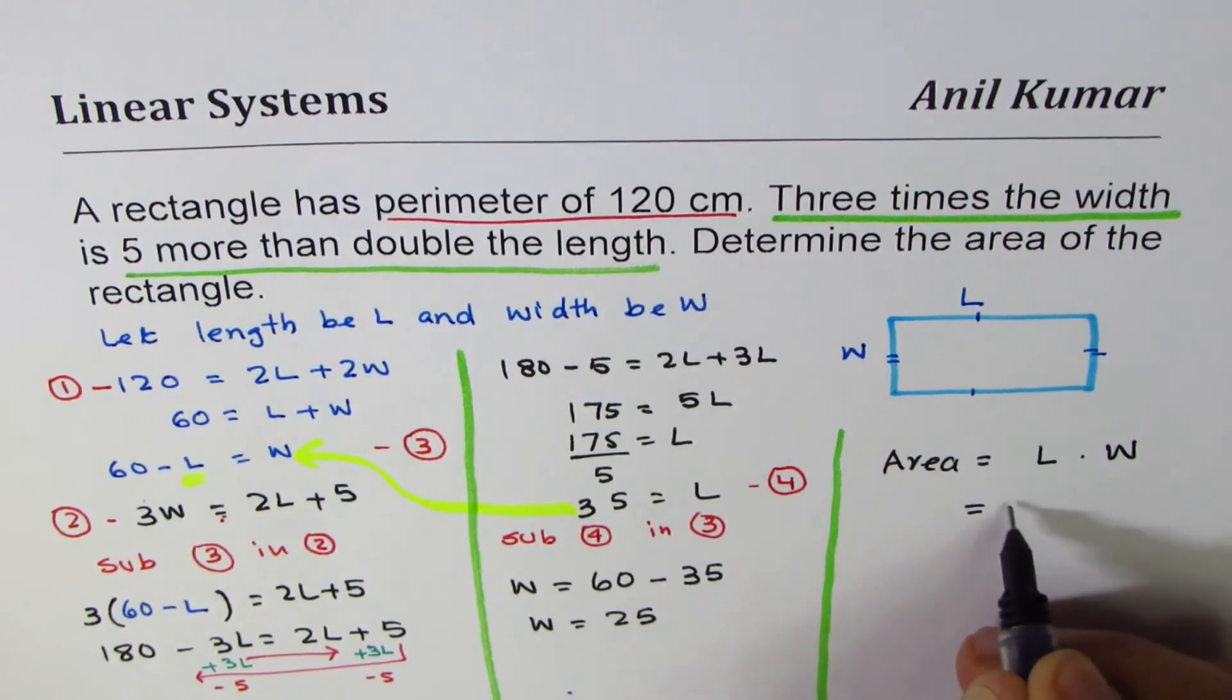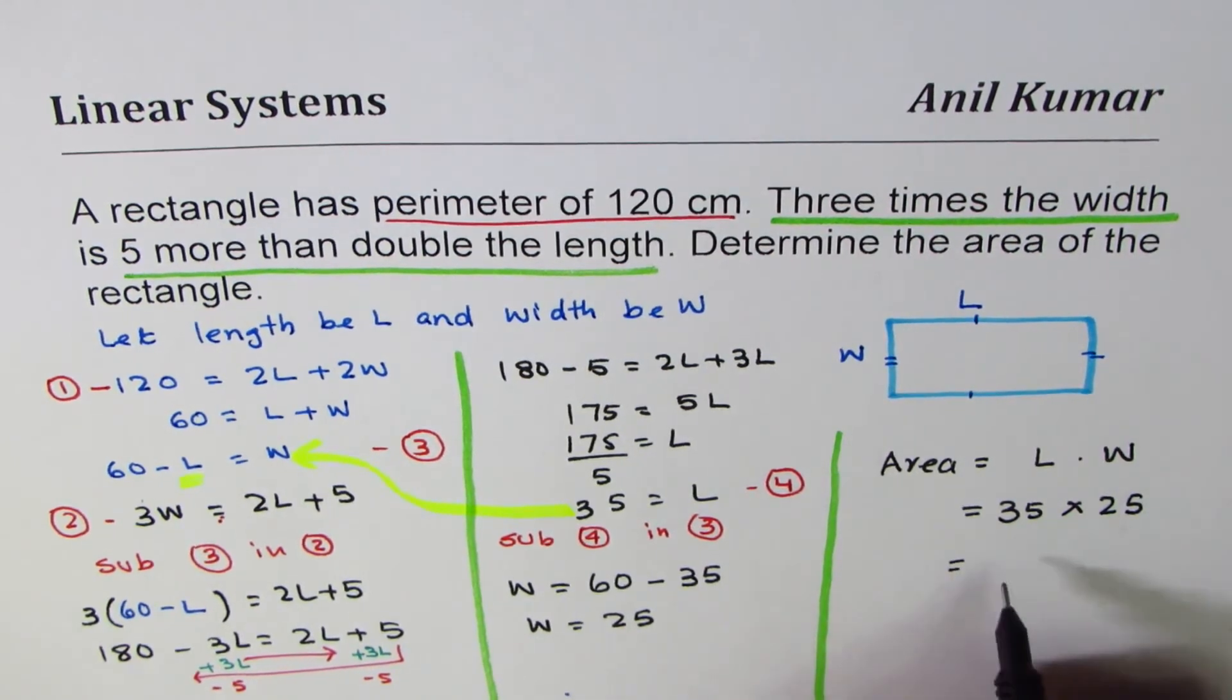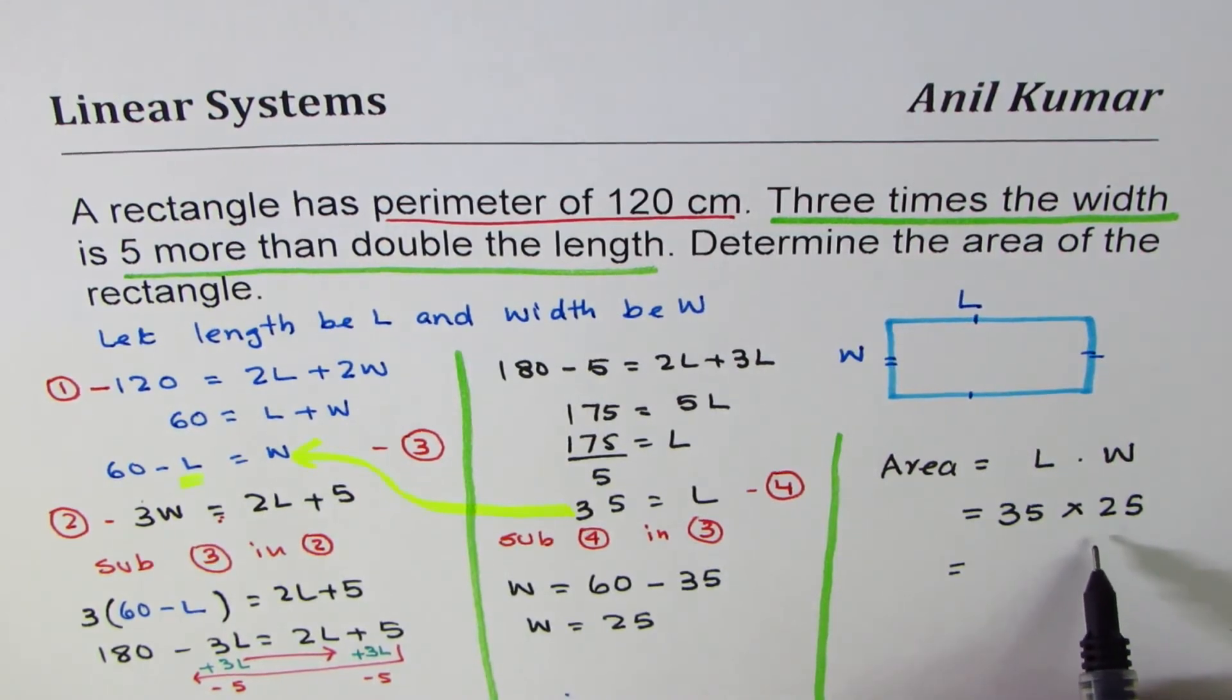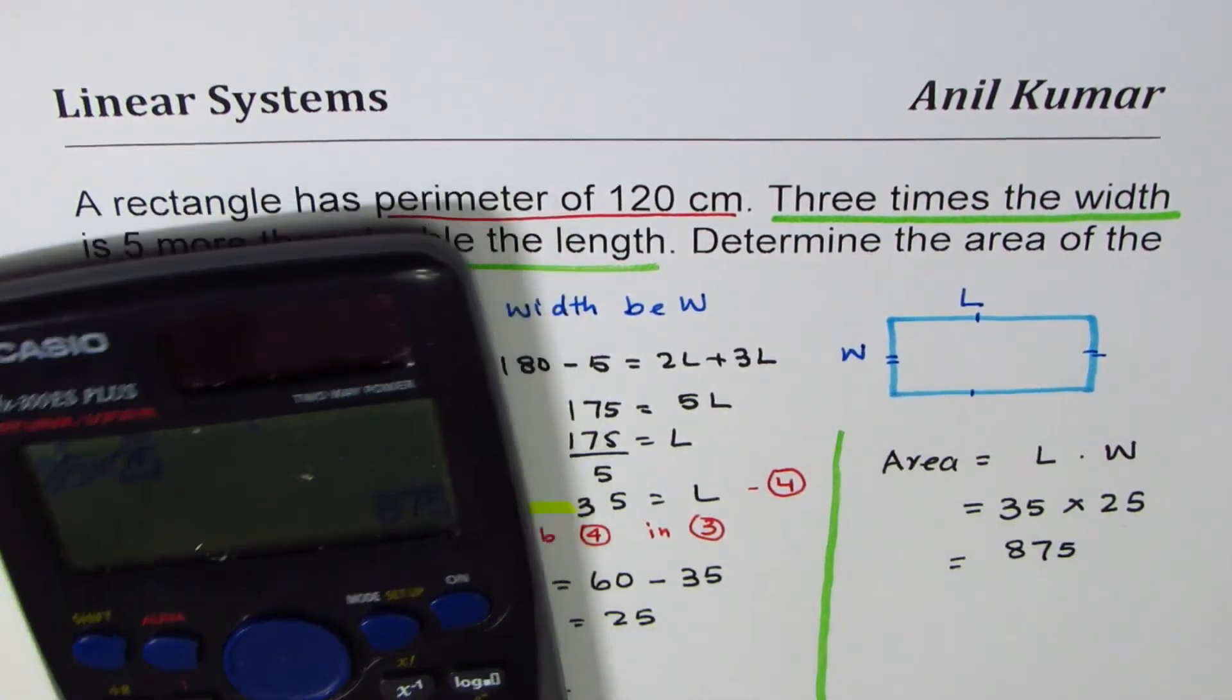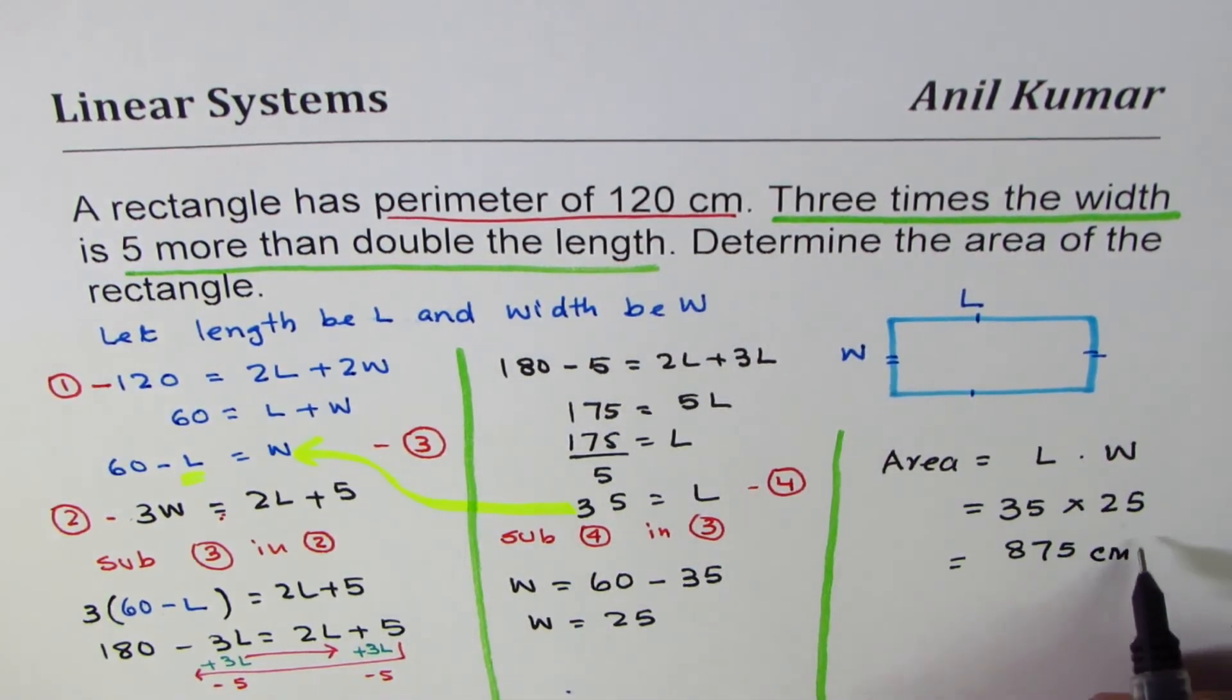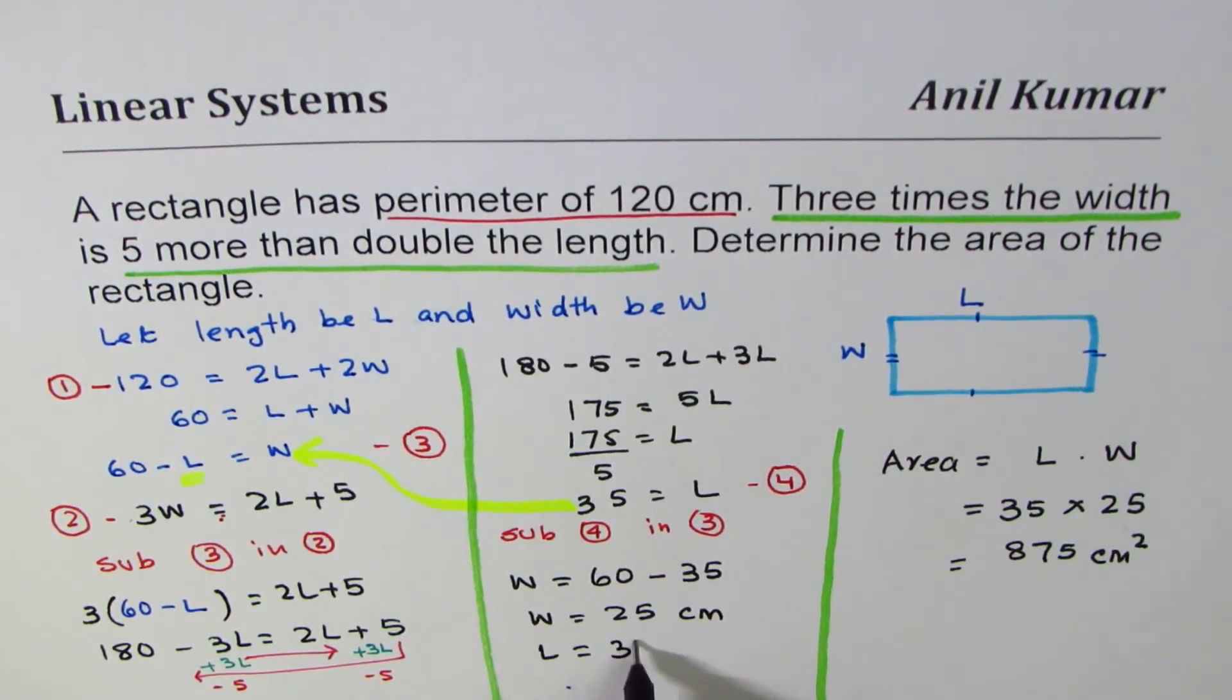Area is length times width, which is 35 × 25. You can multiply and get your result. 35 times 25 equals 875. The units should be square centimeters, since 120 is in centimeters. So we write the units here: width is in centimeters and length is also in centimeters.